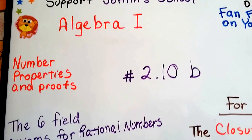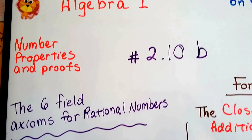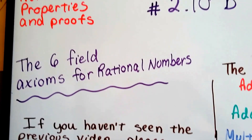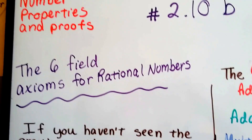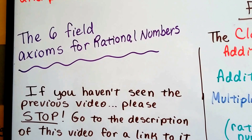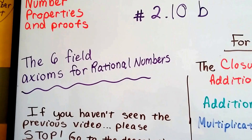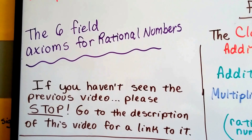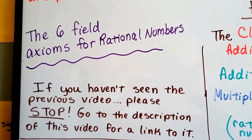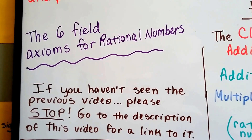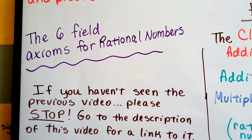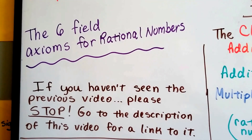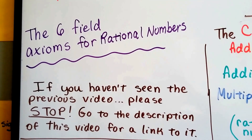Algebra 1, number 2.10b, we're talking about number properties and proofs. This is the six field axioms for rational numbers. If you haven't seen the previous video, number 2.10a, please stop — you're going to be very confused. Go to the description of this video for a link to 2.10a, and you'll be able to link right back to this one from that one's description.